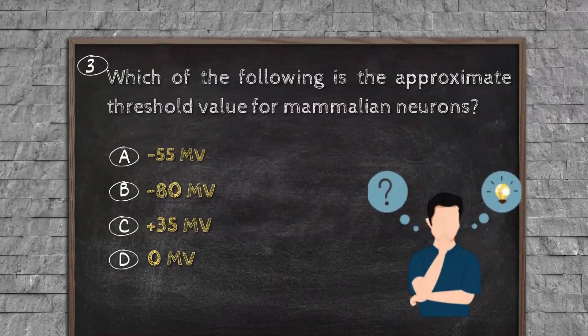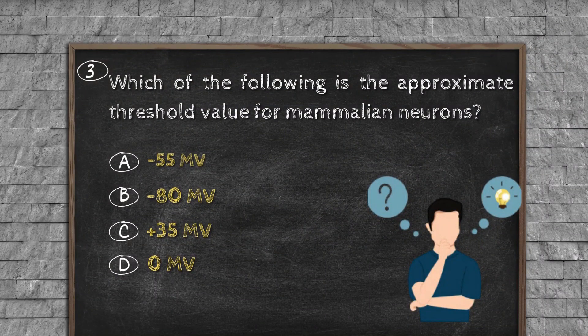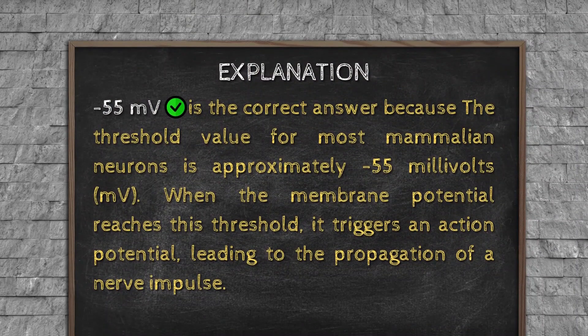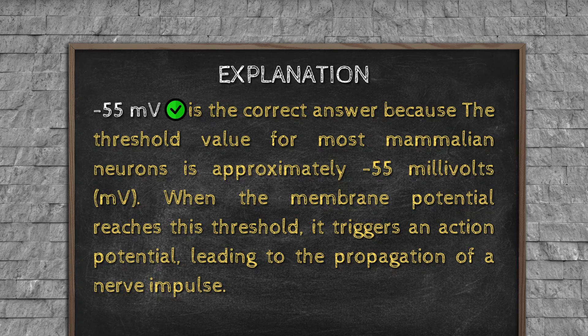Question number three. Which of the following is the approximate threshold value for mammalian neurons? Option A, minus 55 mV. Option B, minus 80 mV. Option C, plus 35 mV. Option D, zero mV. Explanation: Minus 55 mV is the correct answer because the threshold value for most mammalian neurons is approximately minus 55 millivolts. When the membrane potential reaches this threshold, it triggers an action potential, leading to the propagation of a nerve impulse.